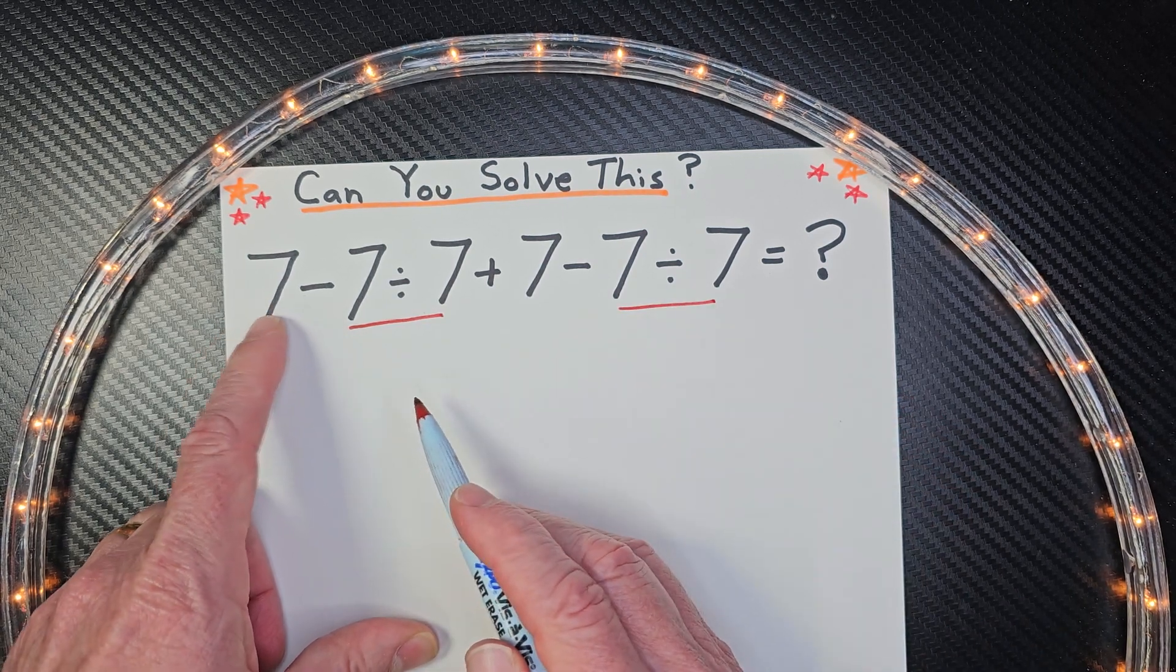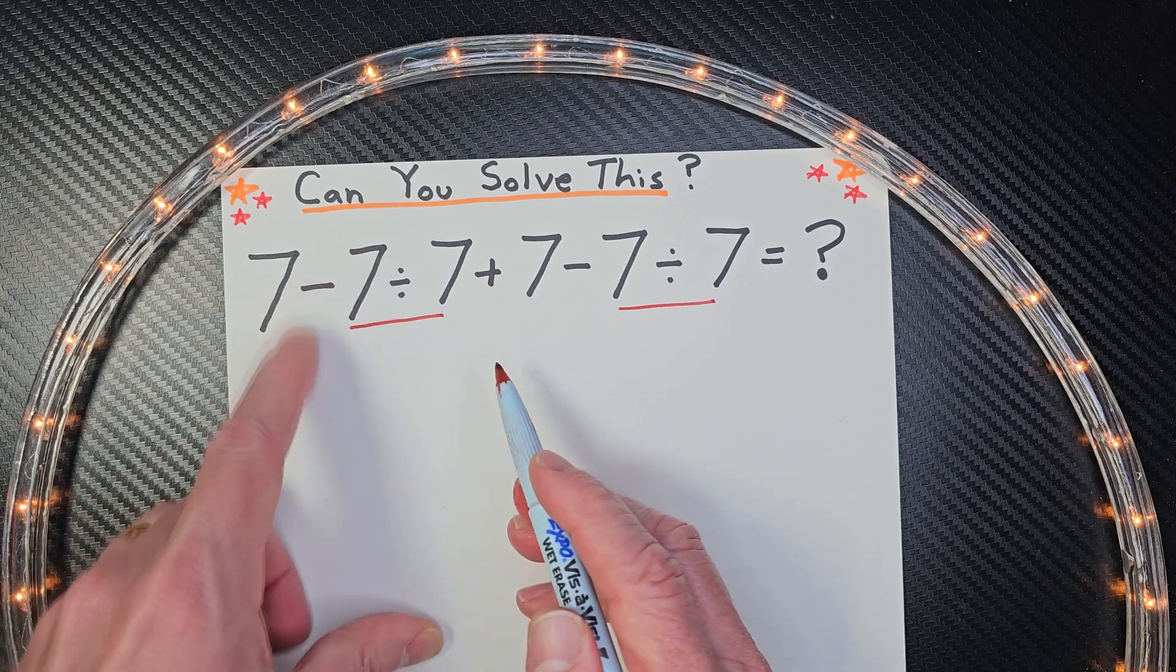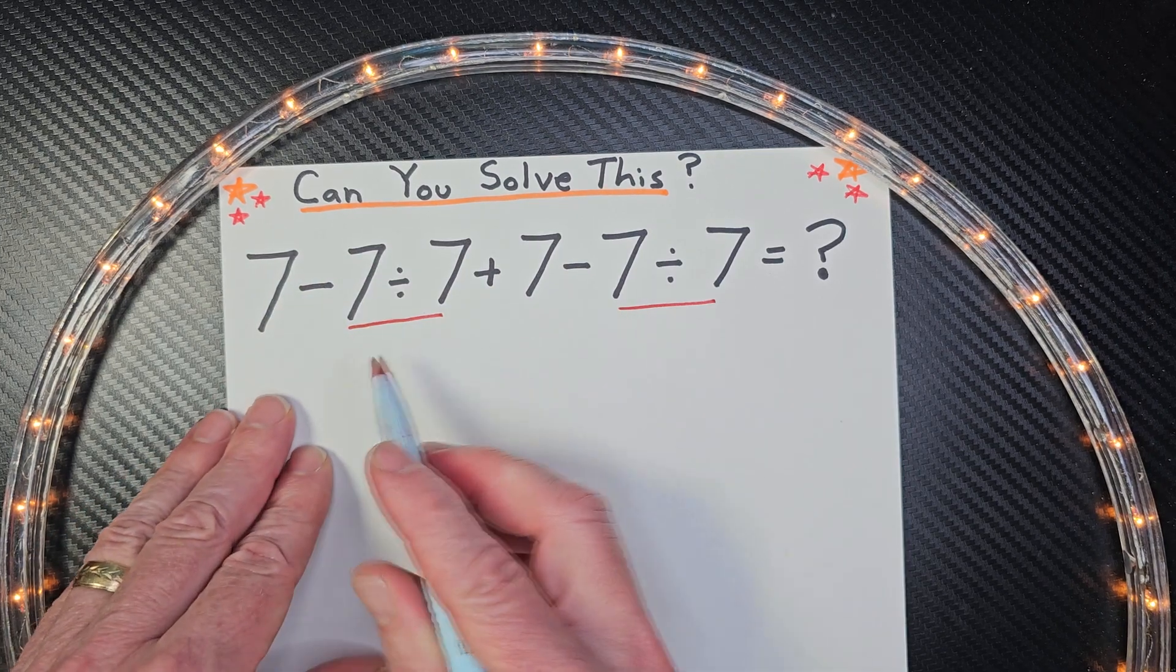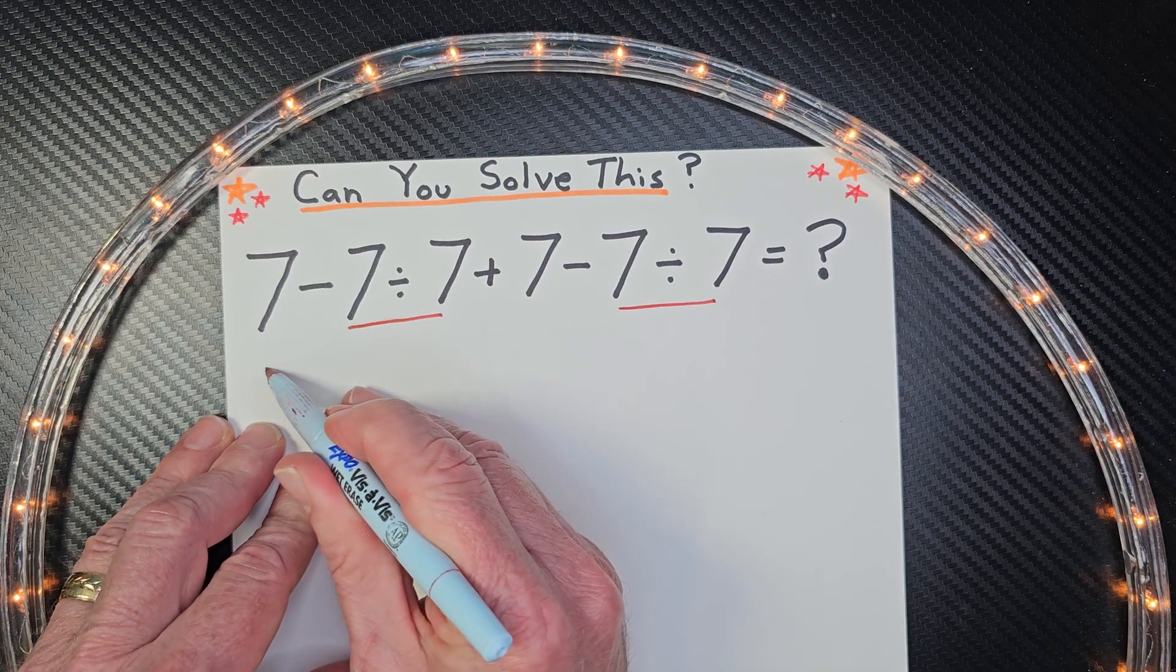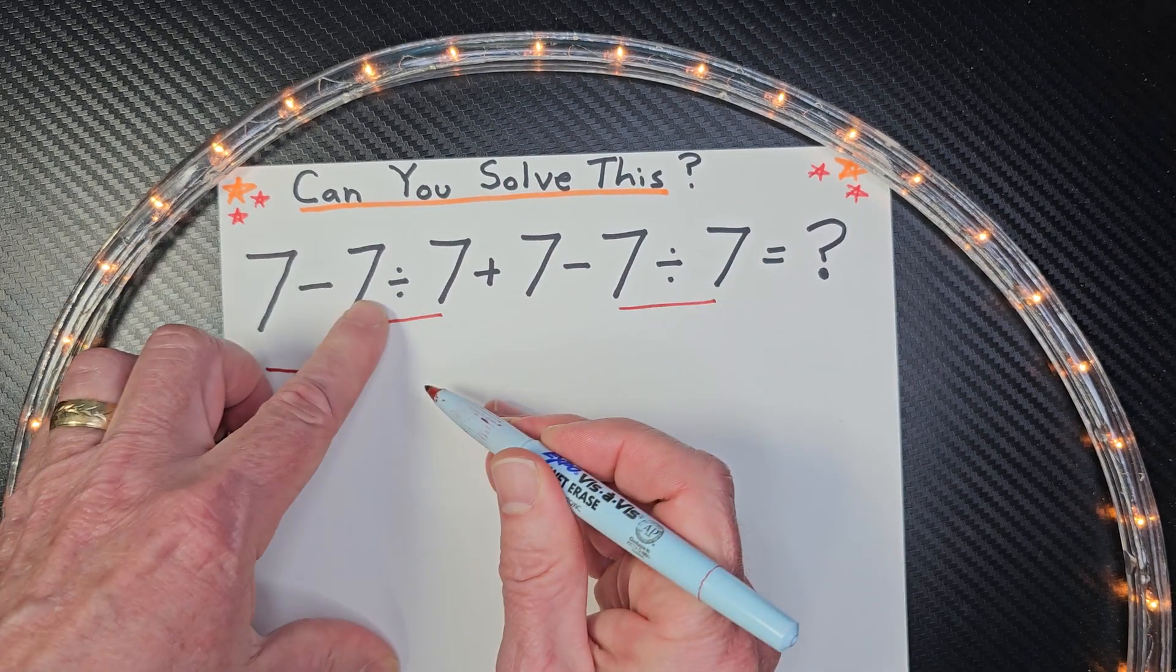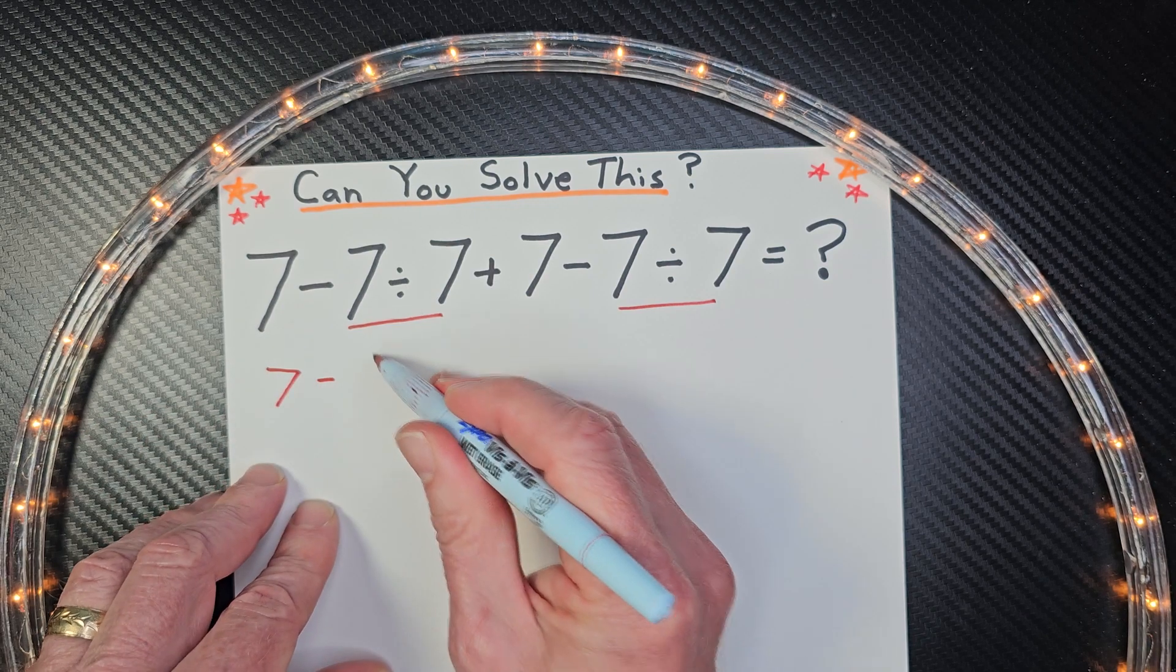All right, do not do this part here, 7 minus 7 and then divide. No, you need to stay within the order of operations so everyone is consistent. So I'm going to rewrite this problem. 7 minus 7 divided by 7 is 1. Uno!